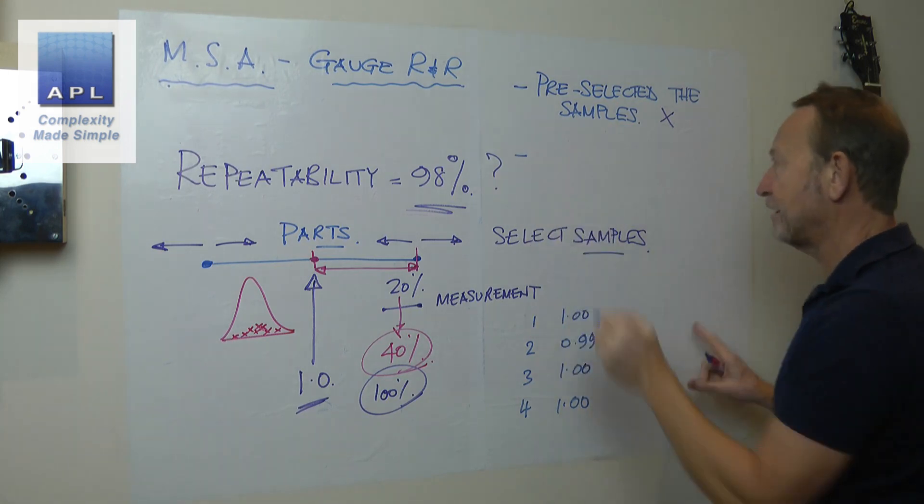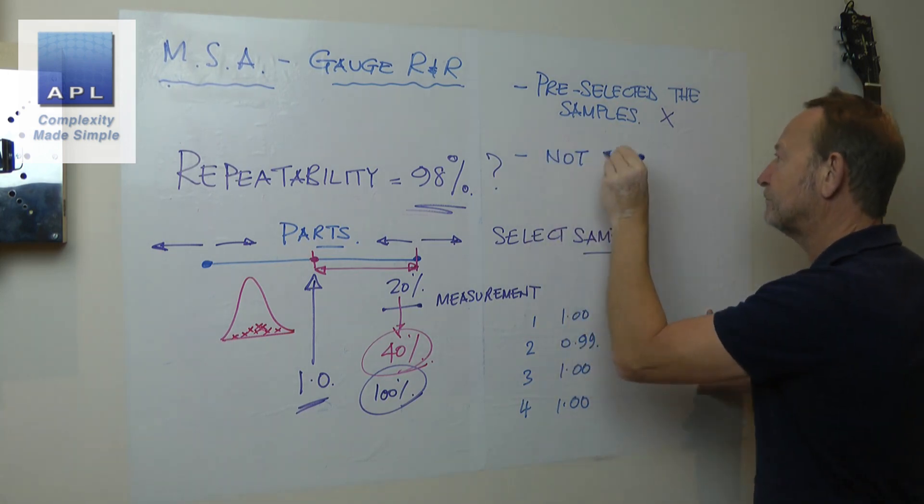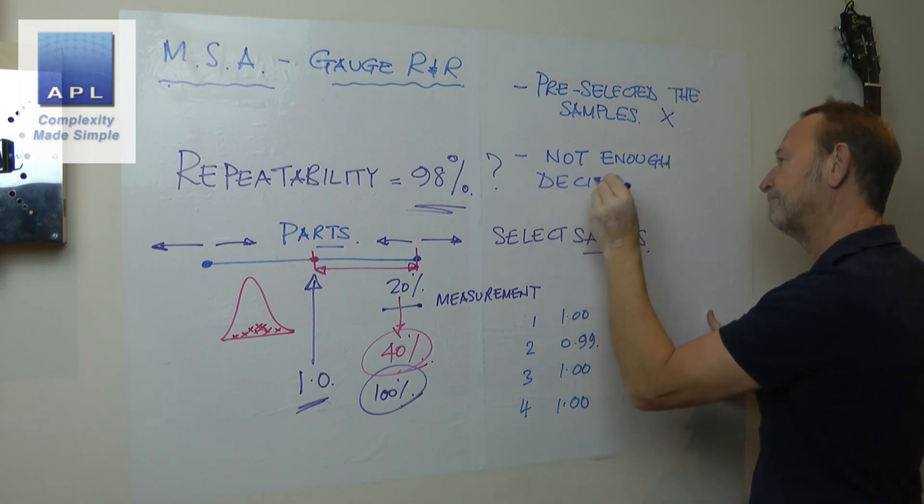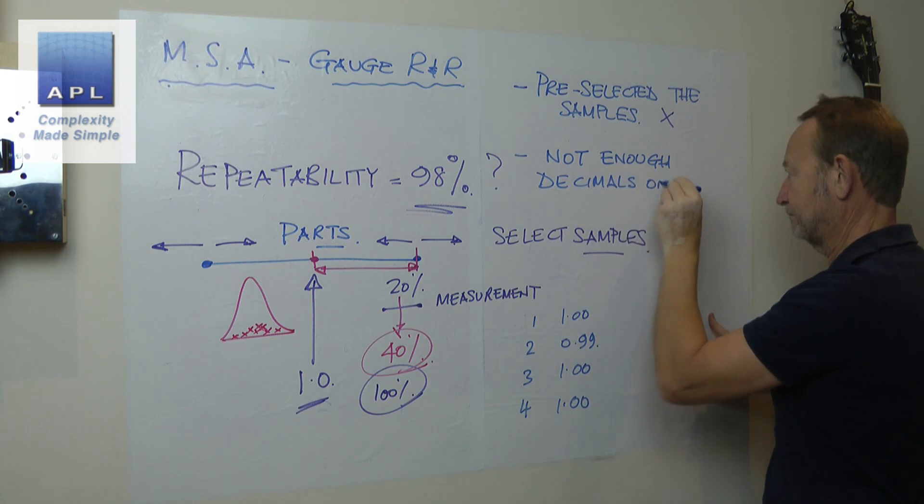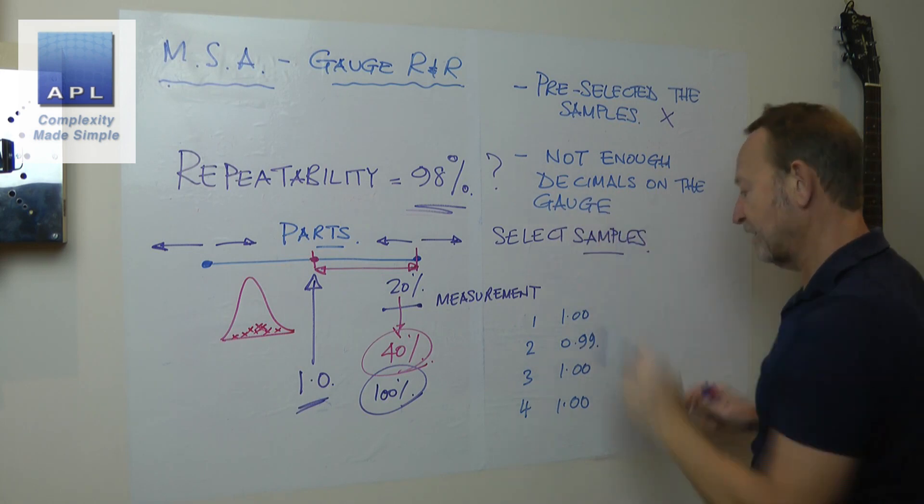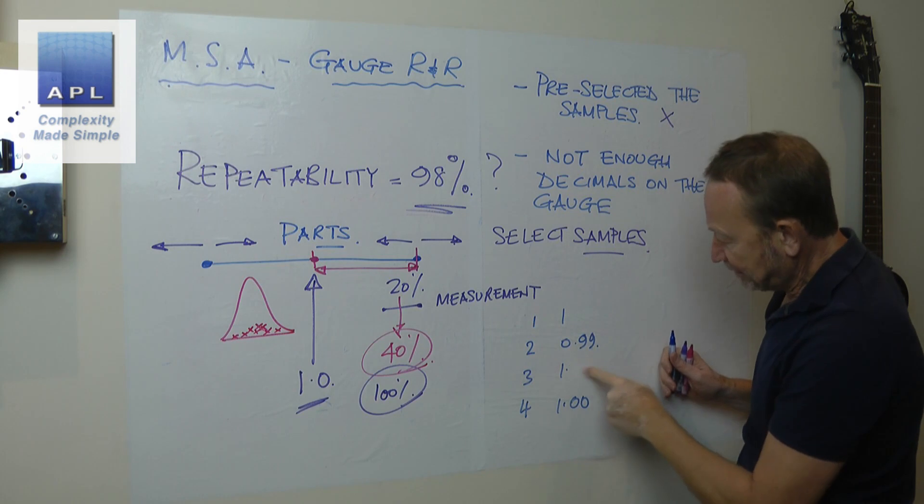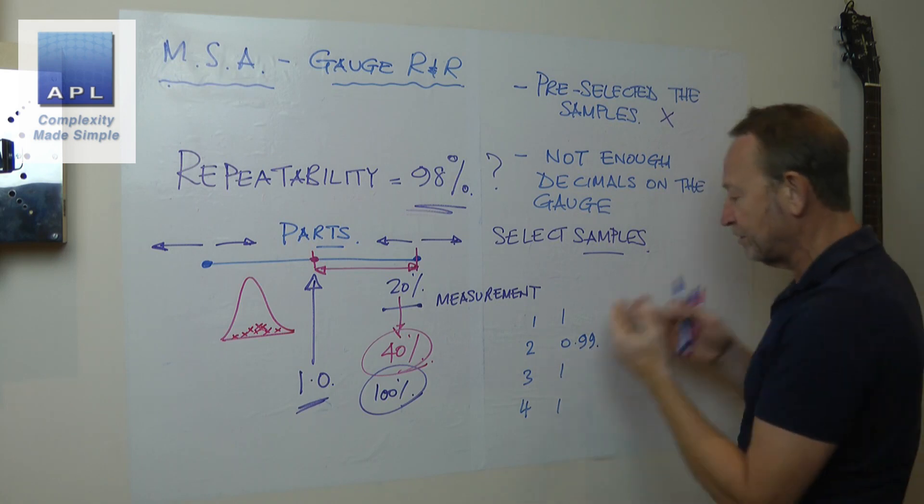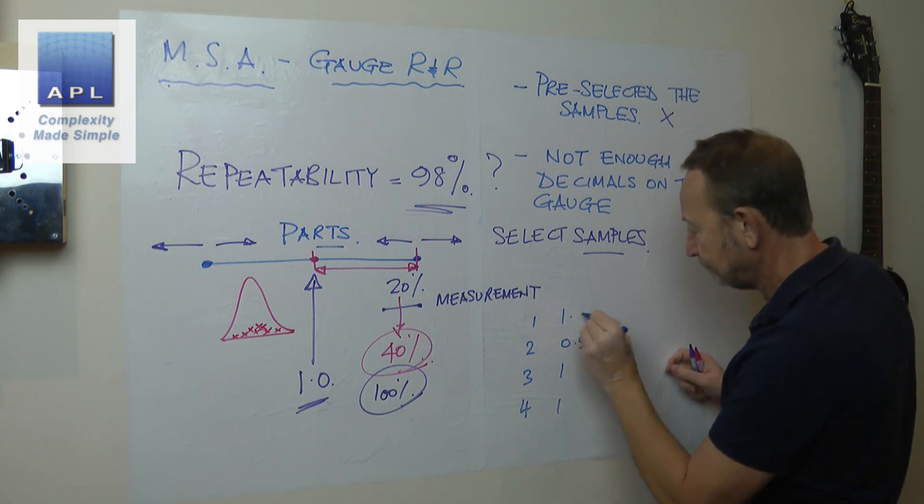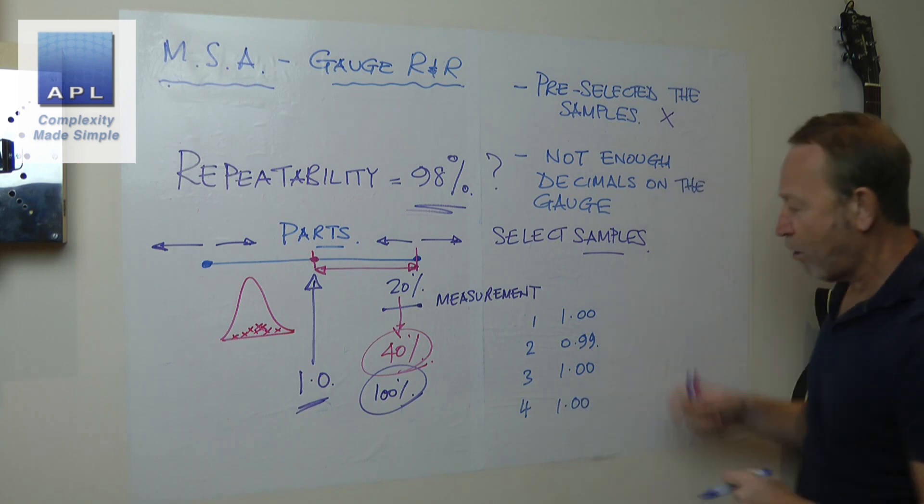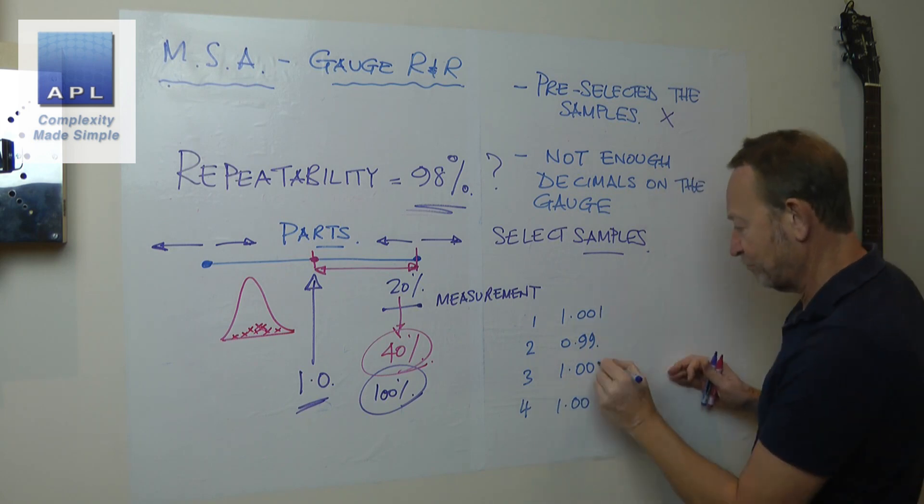The other problem you might have is not enough decimals on the gauge. Now, he sent me the data. Now, when he gets one, one, I don't actually get any decimals at all, I just get this. But when he goes away from one, he gives me 0.99. So I'm going to assume that this is measuring in hundreds. But maybe, maybe these ones aren't ones. Maybe there's an extra decimal place on here. Maybe it really looks like that.